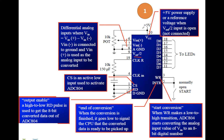Then comes the differential analog inputs: Vin+ and Vin−. The differential input is the difference between these two. Usually the Vin− pin is grounded, so in that case this voltage will be equal to 0 and whatever you have at the input, that is your differential input voltage.